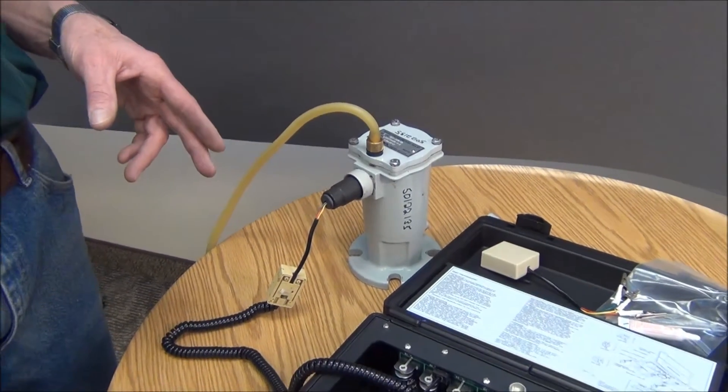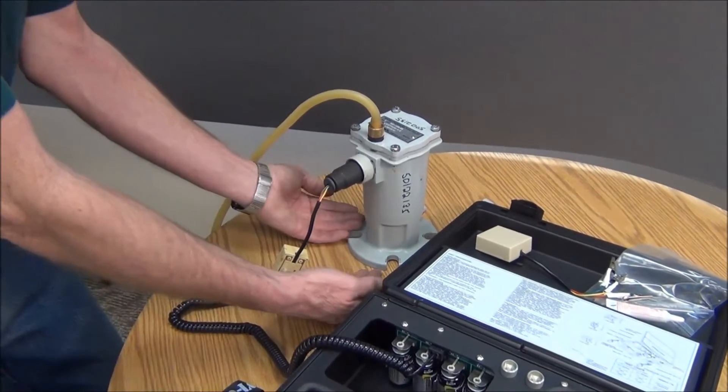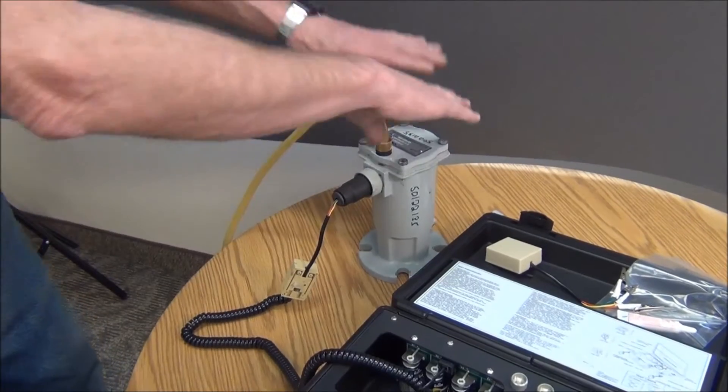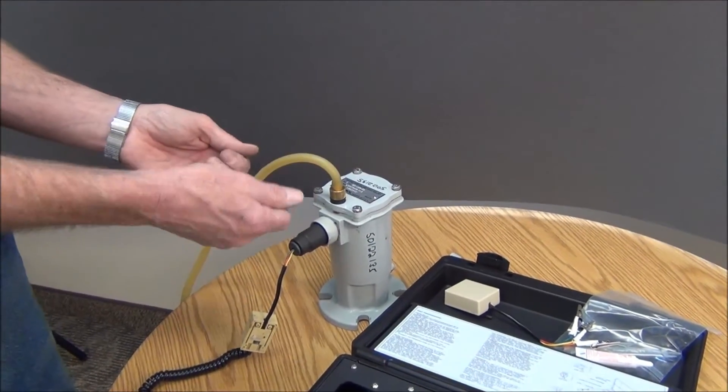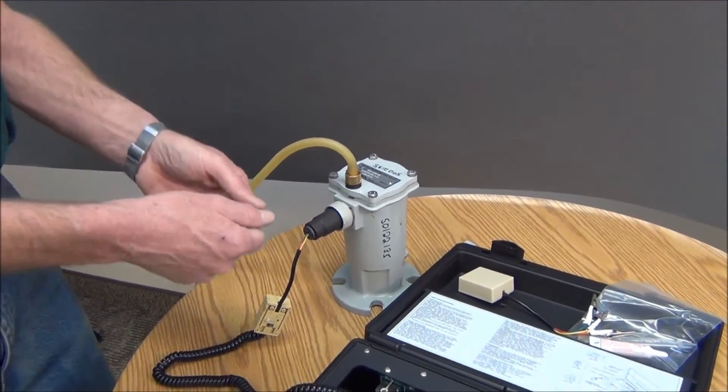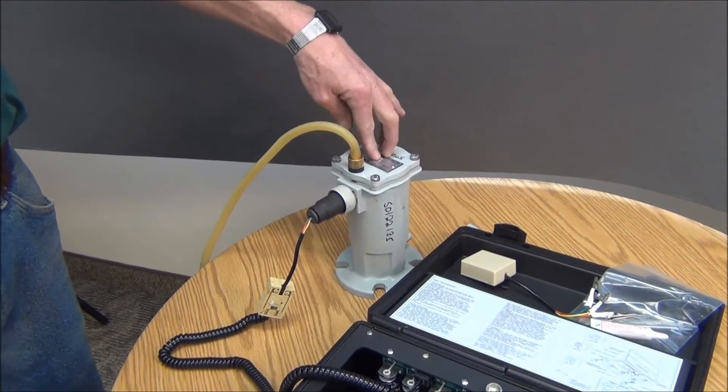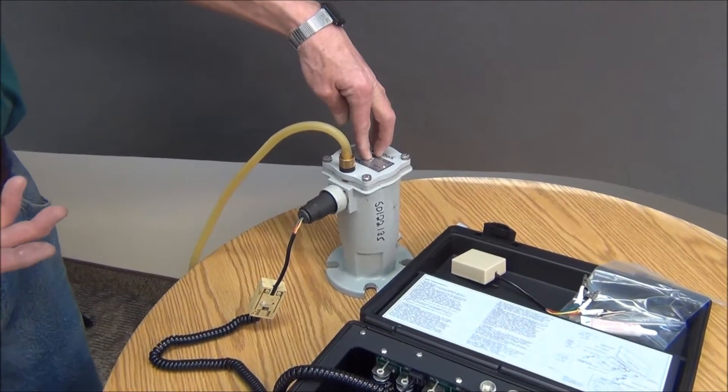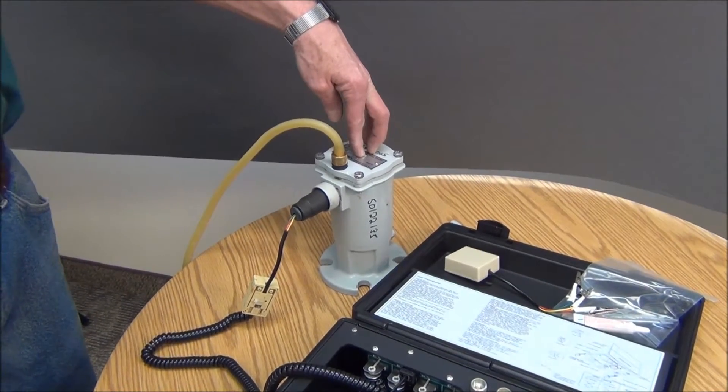What we're doing with this test kit is we're pressurizing the top, then we're going to pull a valve. We're going to let the pressure escape out really quick, and it'll simulate a sudden increase in pressure in the tank.